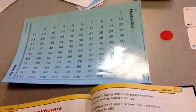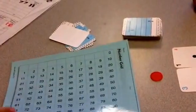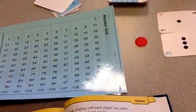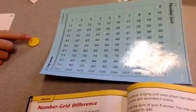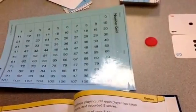What you need is a number grid, a deck of cards, and each of you needs a marker. We have these circles that we use.